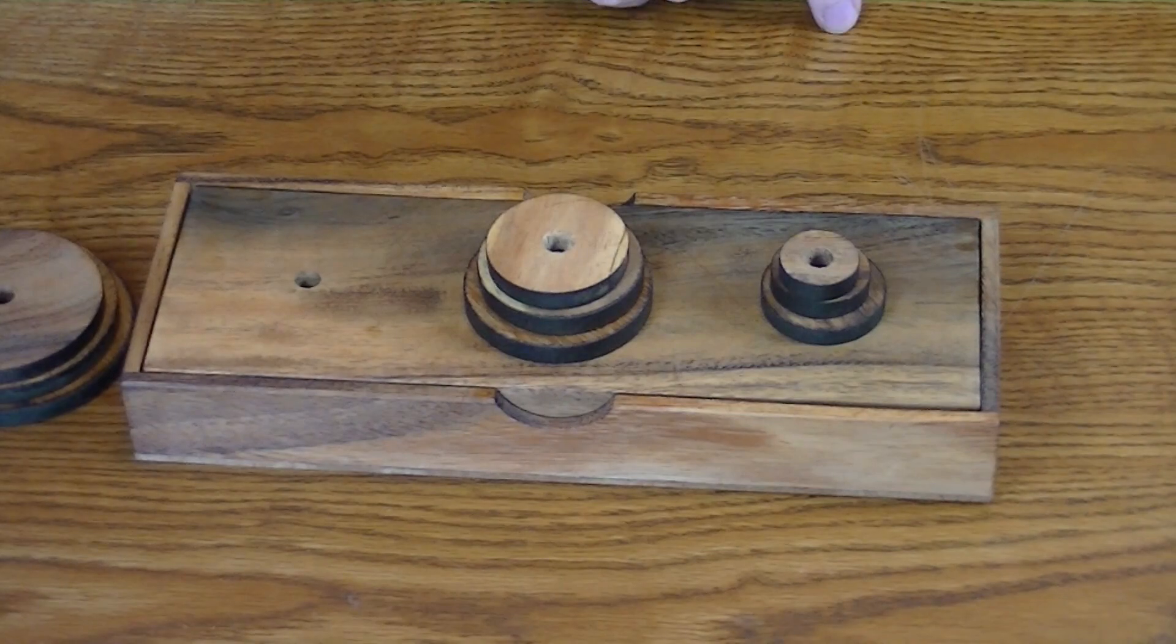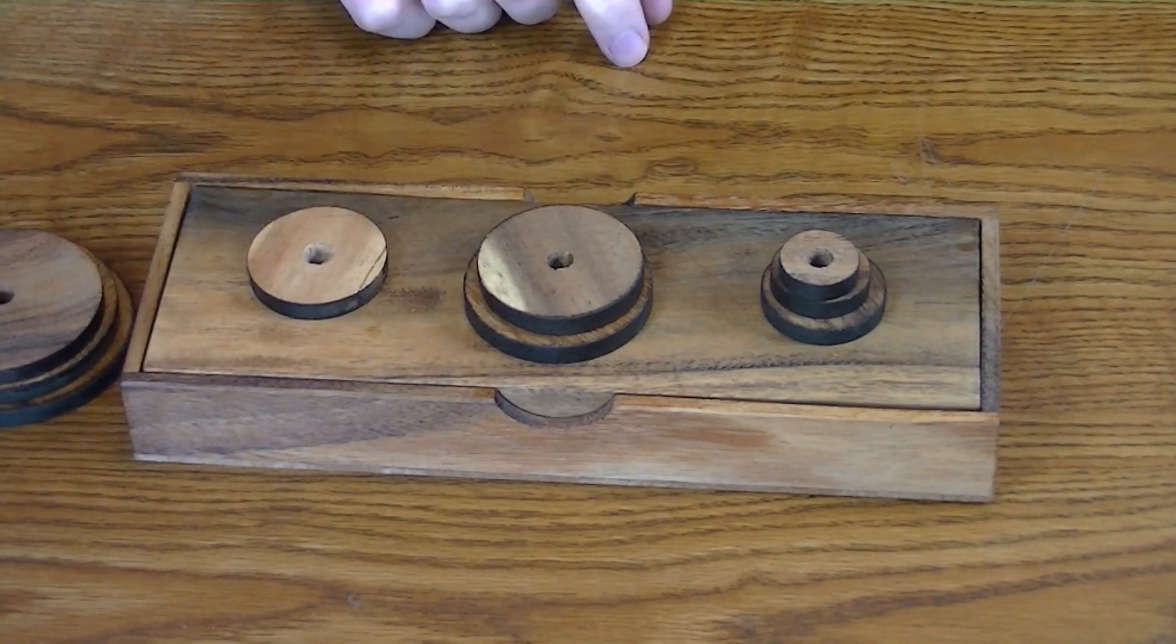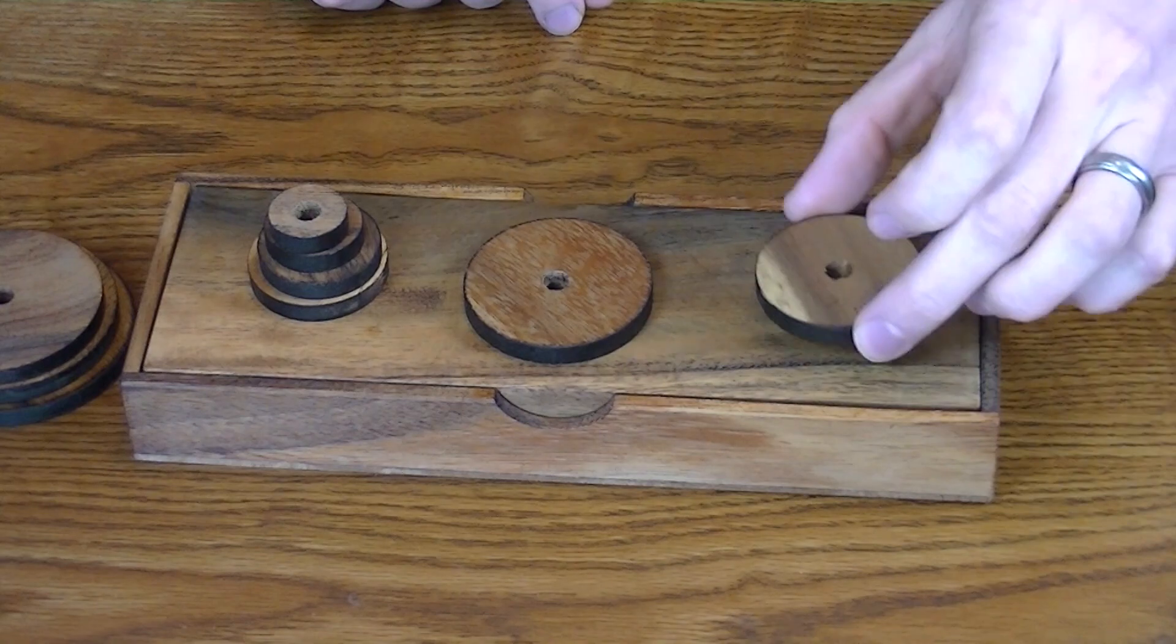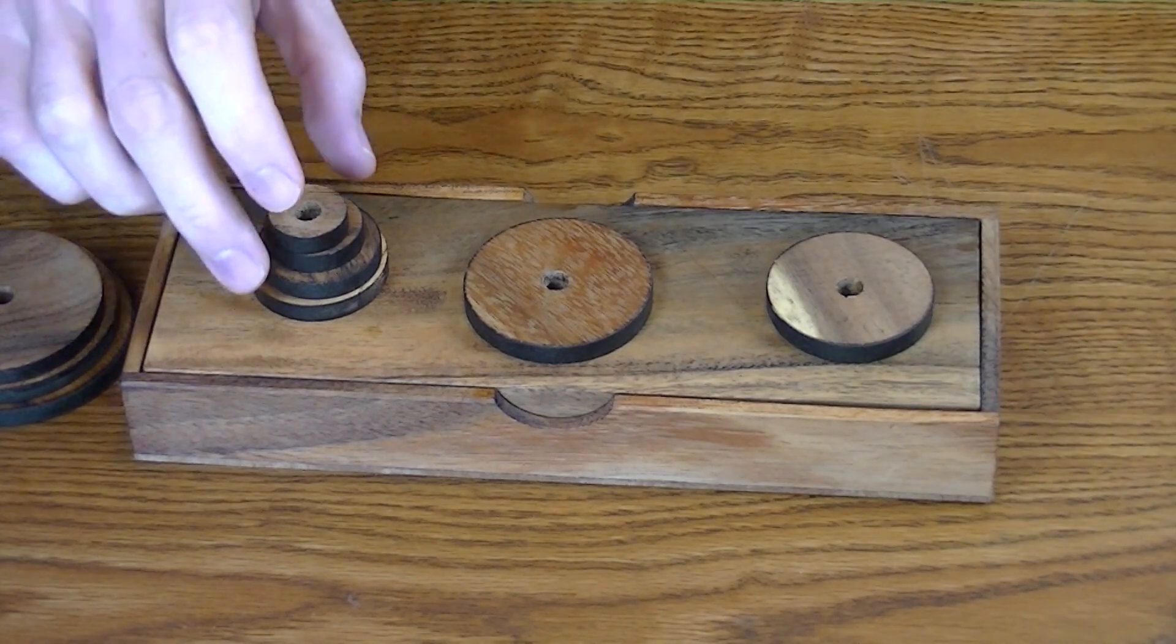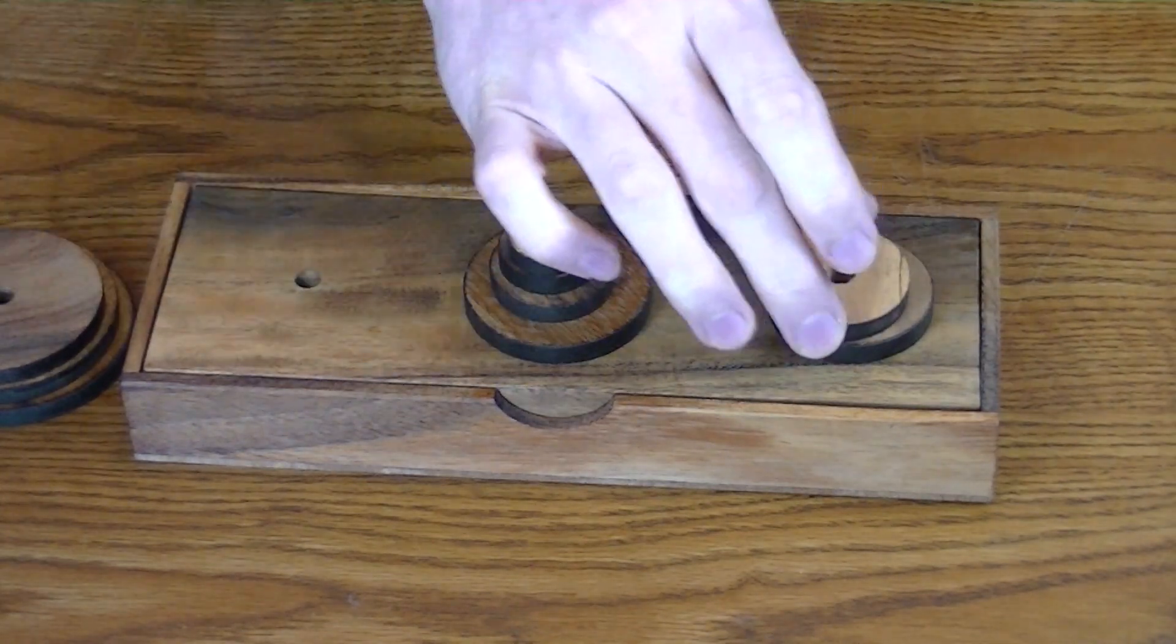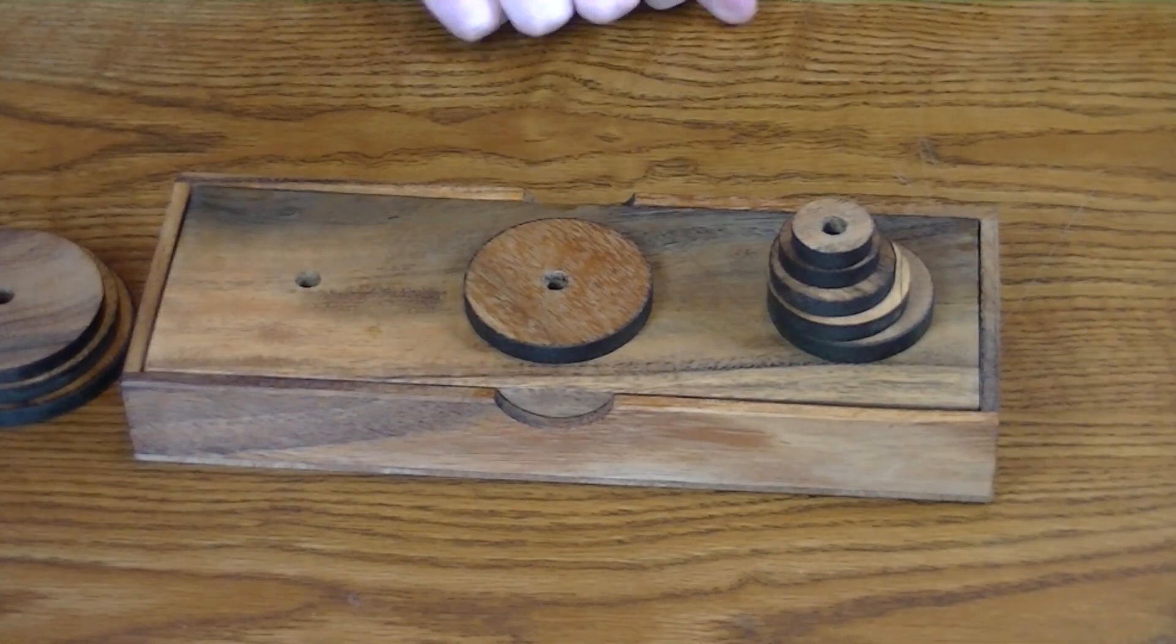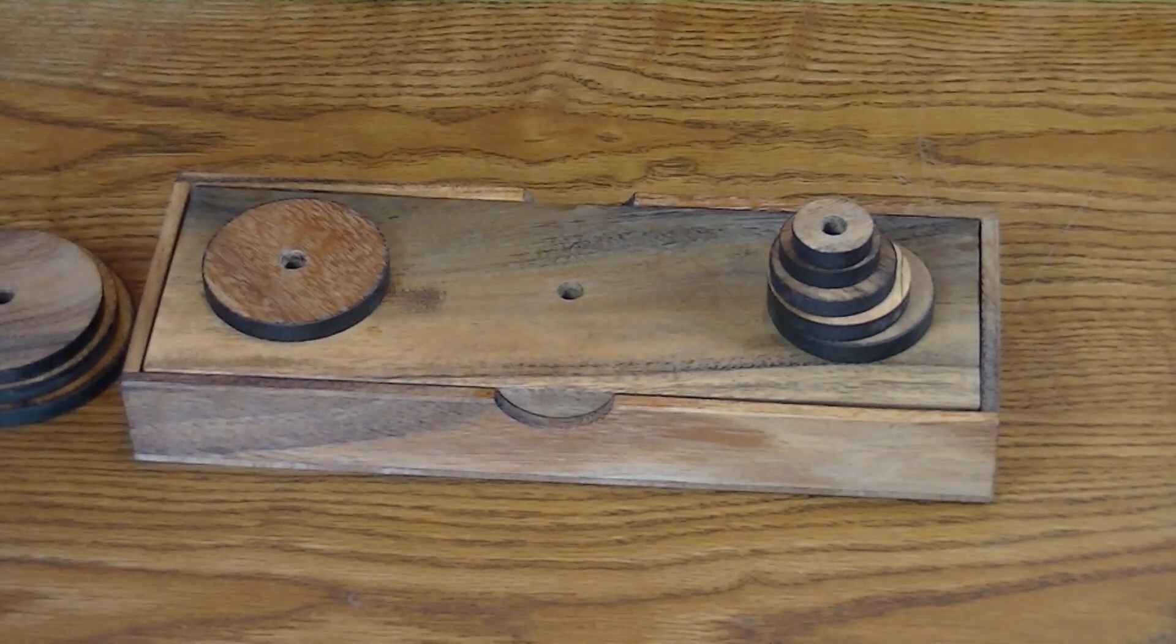My stack of three would move to there. Four would go over there. Five would go here, and then I have to do three here to go to there, and then this six would go here.